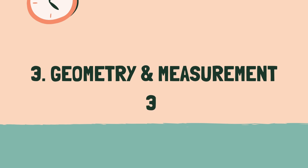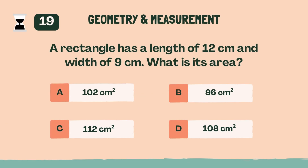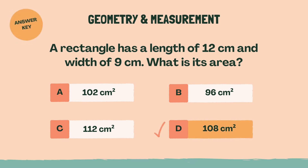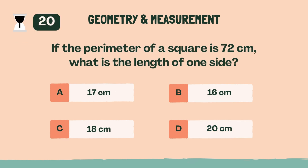3, 2, 1, go. A rectangle has a length of 12 centimeters and a width of 9 centimeters. What is its area? The answer is D, 108 square centimeters.